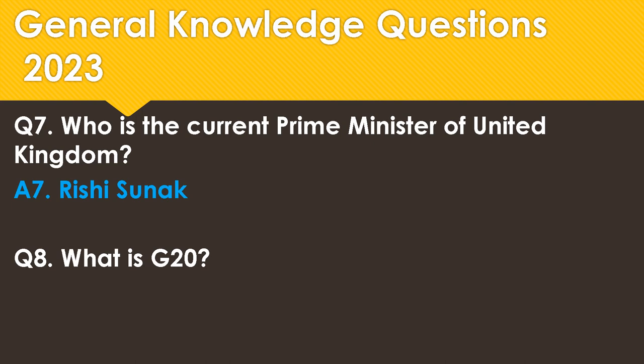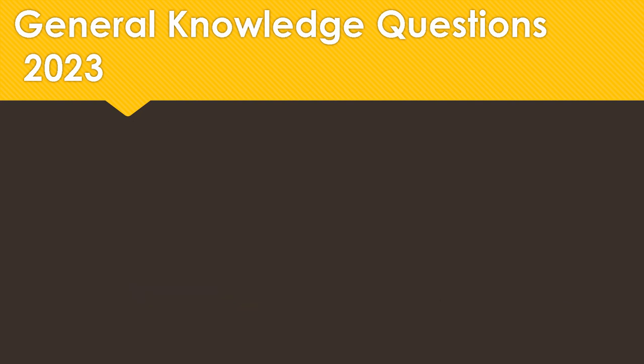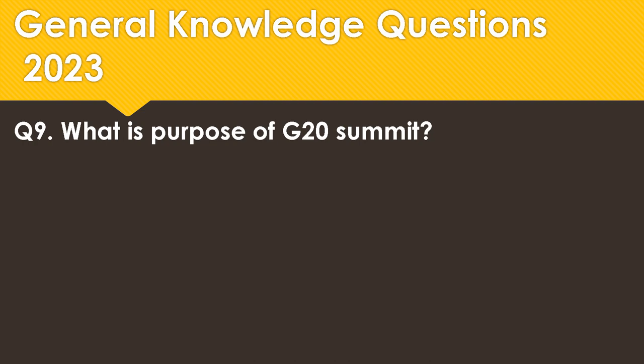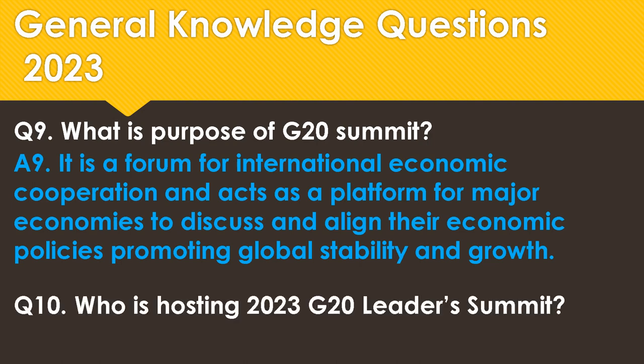What is G20? The G20, or Group of 20, is an intergovernmental forum comprising 19 countries including India and the European Union. What is the purpose of the G20 Summit? It is a forum for international economic cooperation and acts as a platform for major economies to discuss and align their economic policies, promoting global stability and growth.